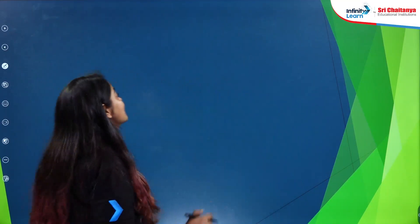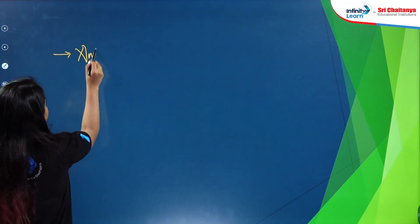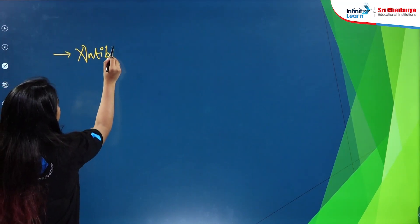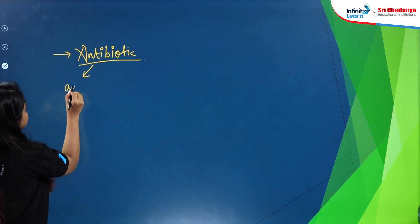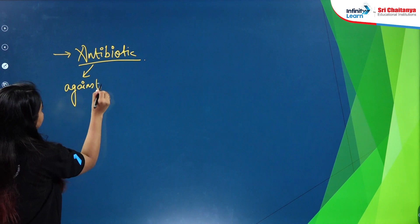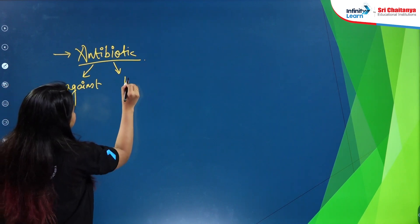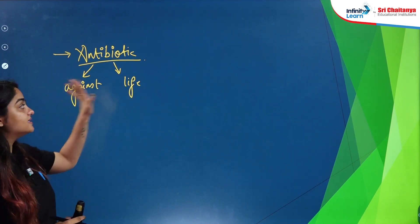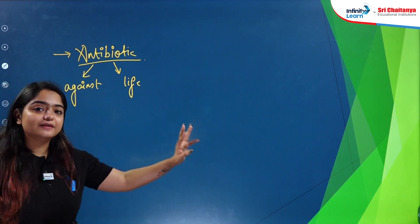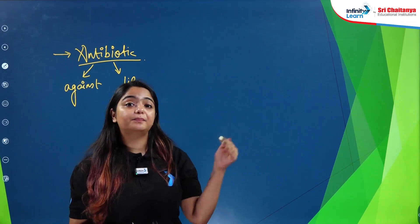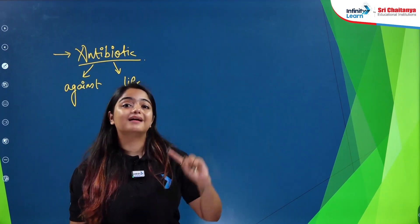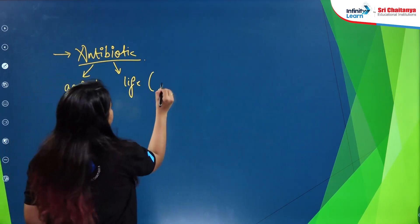The last utilization we will discuss today is antibiotics. The word 'anti' means against and 'bio' means life — so antibiotic altogether means against life, specifically against the life of disease-causing microorganisms. For humans, antibiotics are pro-life, but they work against the life of the pathogens. It is remarkable that with the help of microorganisms themselves, we can make a medicine that helps us get rid of disease-causing microorganisms.